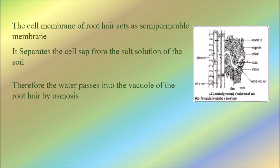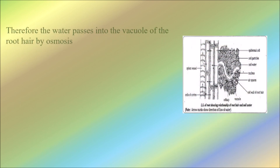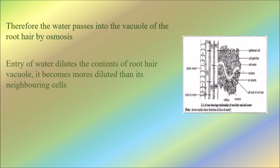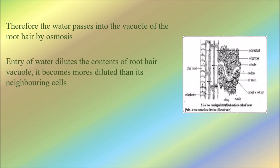As the cell sap is separated from the soil solution, water passes into the vacuole of the root hair by osmosis. The entry of water dilutes the contents of the root hair vacuole.